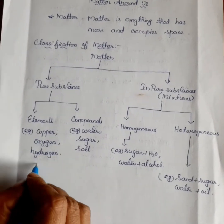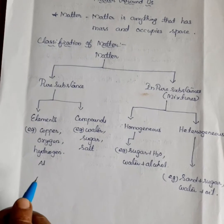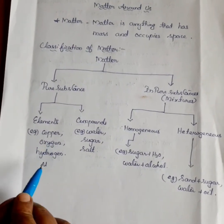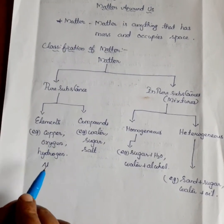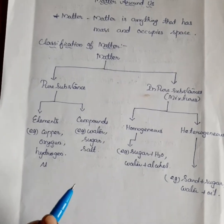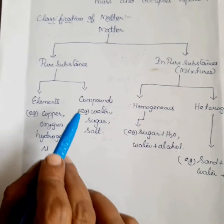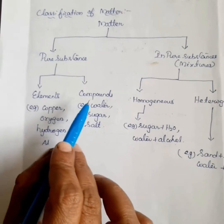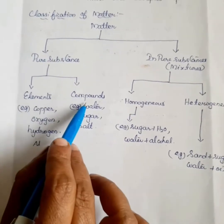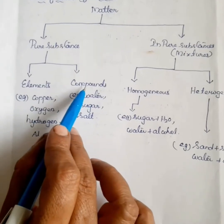Another example is aluminium (Al). Aluminium is an example of an element — it is made up of aluminium atoms only. What is a compound? Two or more elements combined together form a new substance called a compound.